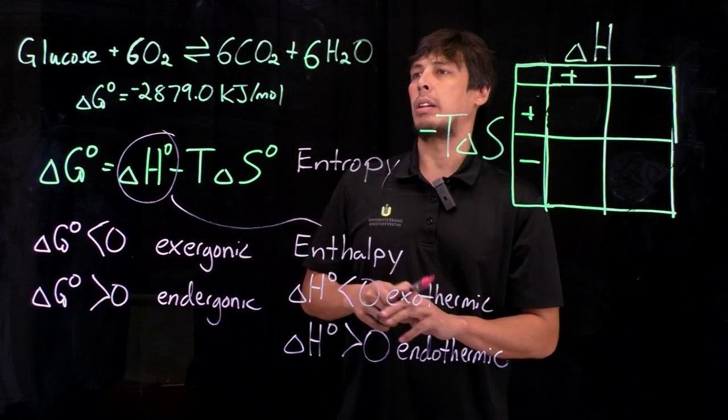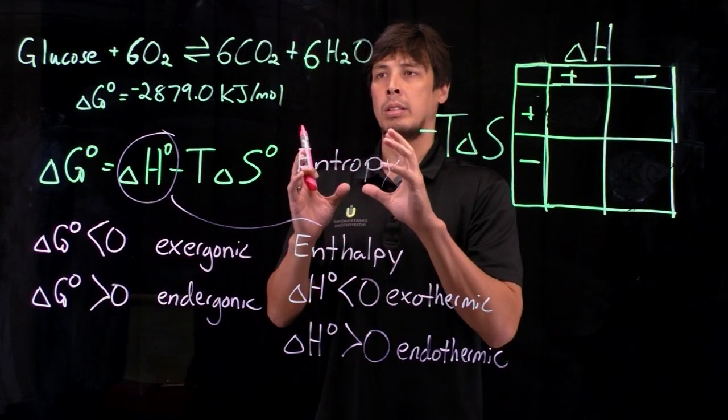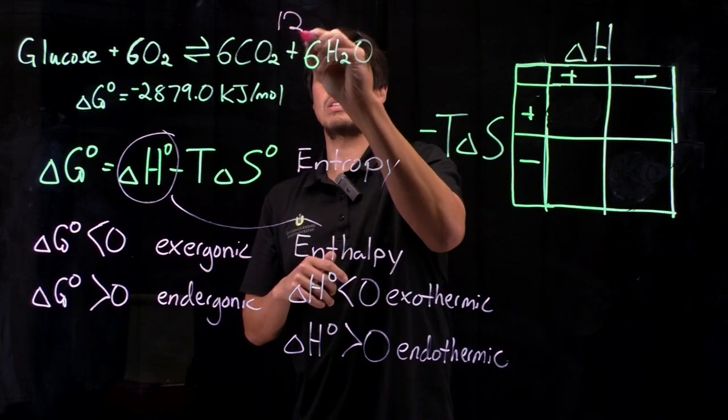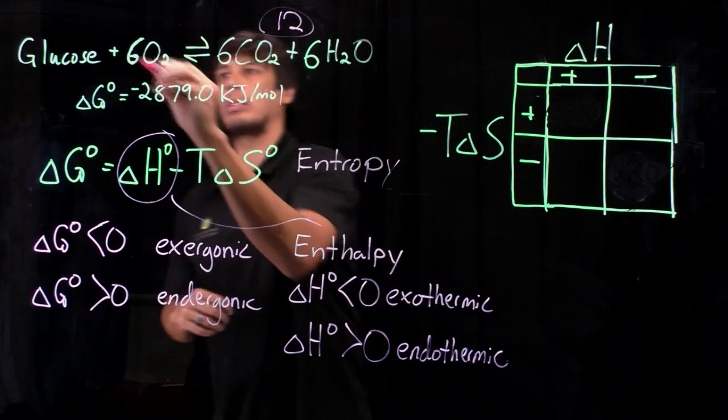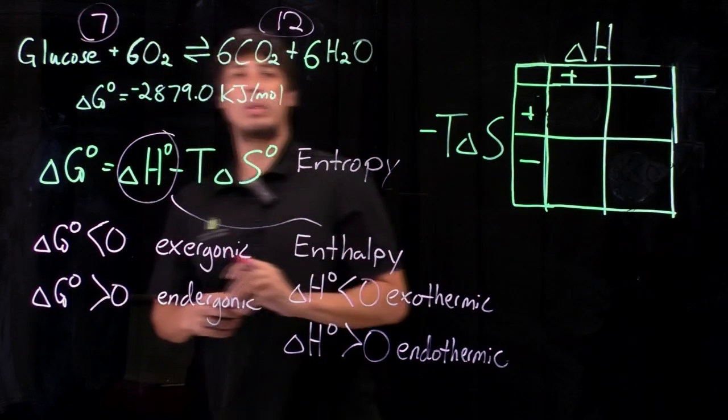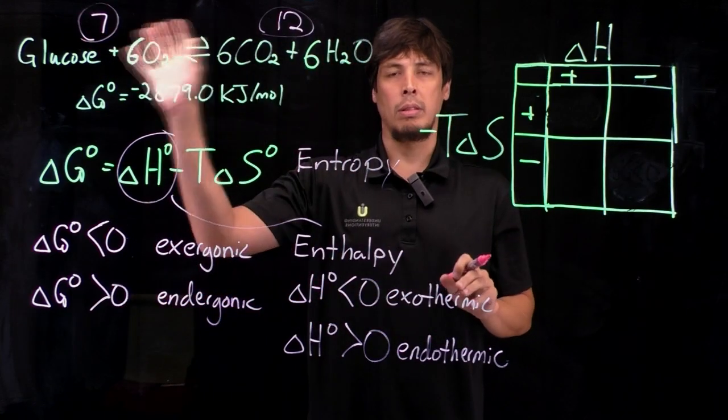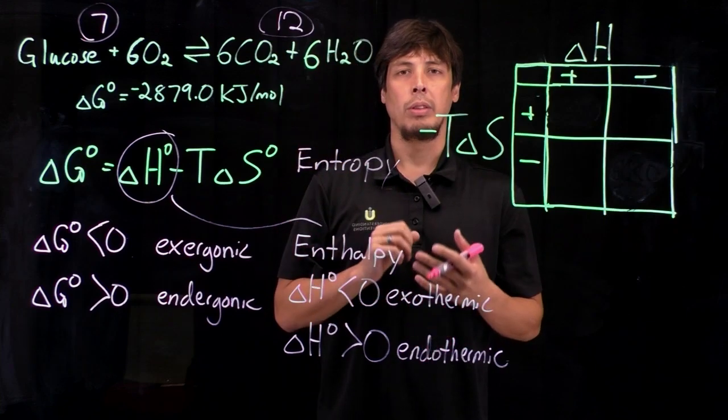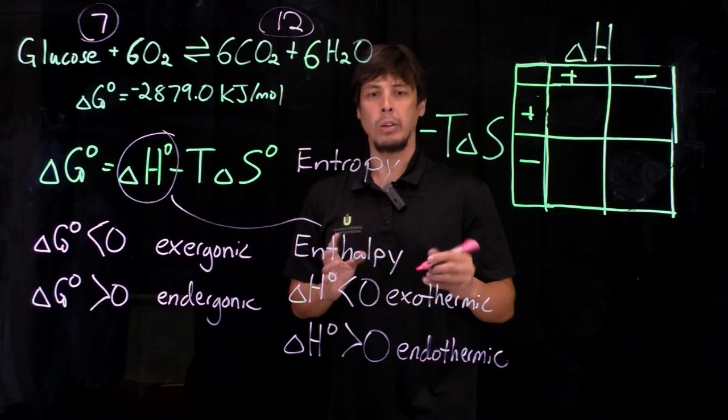The entropic term we can look at by looking at the number of product molecules, which in this case is 12, versus the number of reactant molecules, which is 7. So we take 7 molecules on the reactant side and we turn it into 12. So this increase means that we have an increase in entropy.